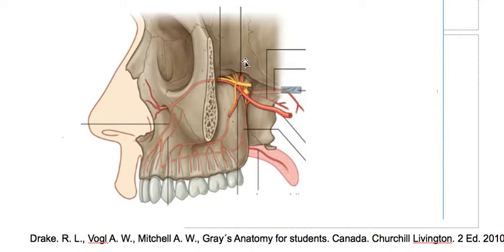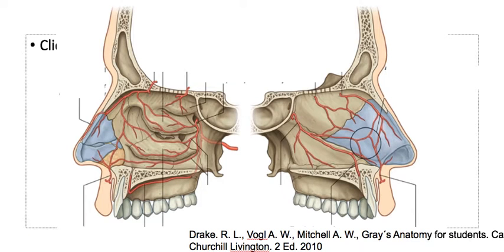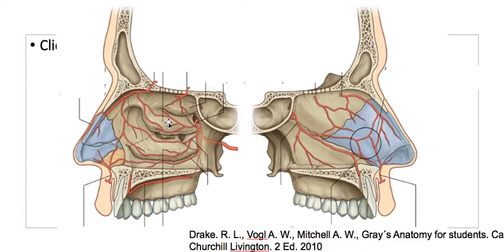Then we have the sphenopalatine artery, passing through the sphenopalatine foramen. This artery has an internal branch or posterior septal branch, and a lateral nasal branch or external branch. The internal branch anastomoses with the nasal branches of the palatine artery and with the nasal branch of the labial artery. The external branch anastomoses with the ethmoidal arteries and supplies the conchae and the maxillary sinus.